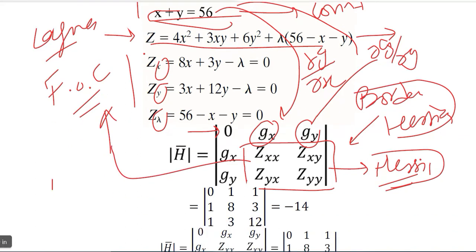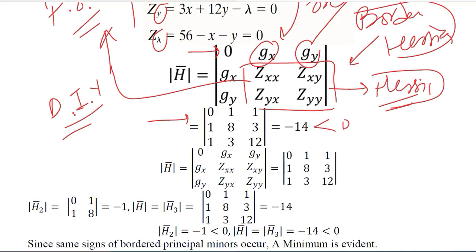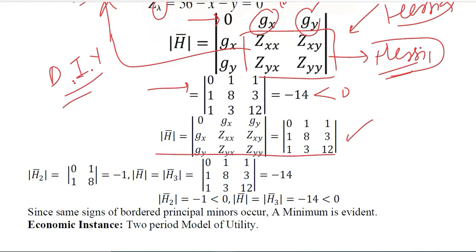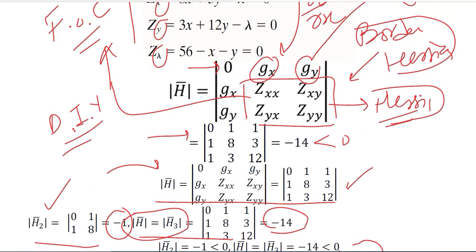After finding these values — this is a small DIY for you — you have to do this and see if you get the correct answers. We have substituted all these values and the result is equal to minus 14, which is a negative value. Now I can form those minors. This is the overall bordered Hessian determinant. The second minor is the first non-trivial one because the first minor is always equal to 0. Its answer is negative. The third minor equals the bordered Hessian naturally, as it contains all elements, and it is equal to minus 14. Both of them are negative, which means we are led towards a minimum point.